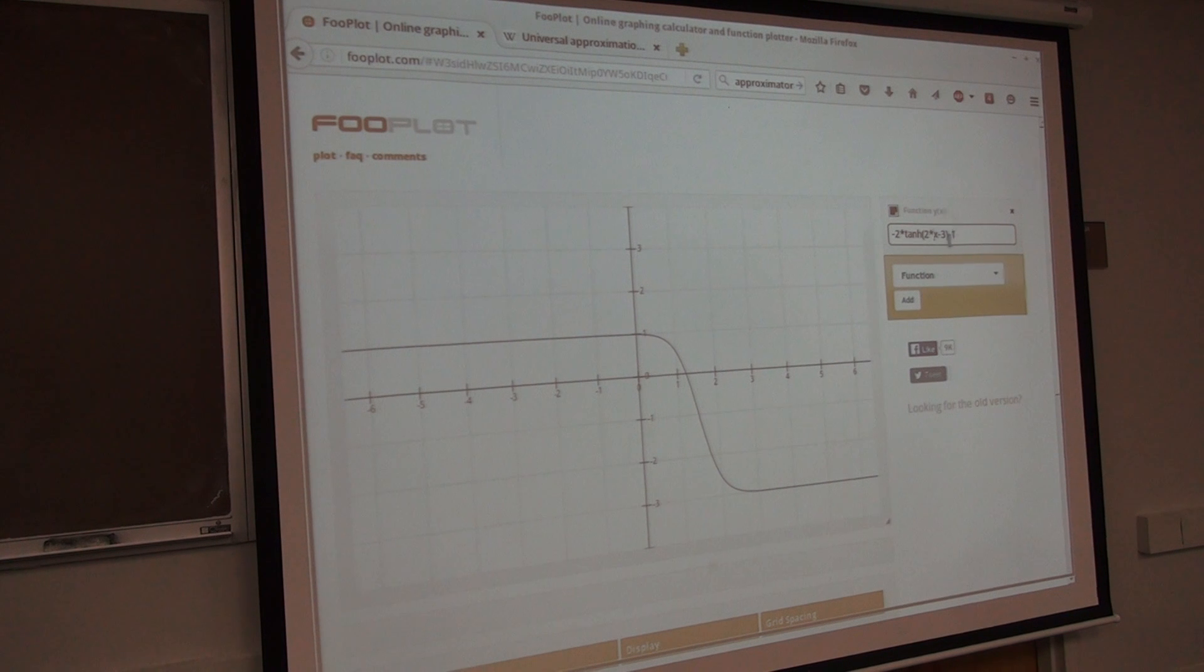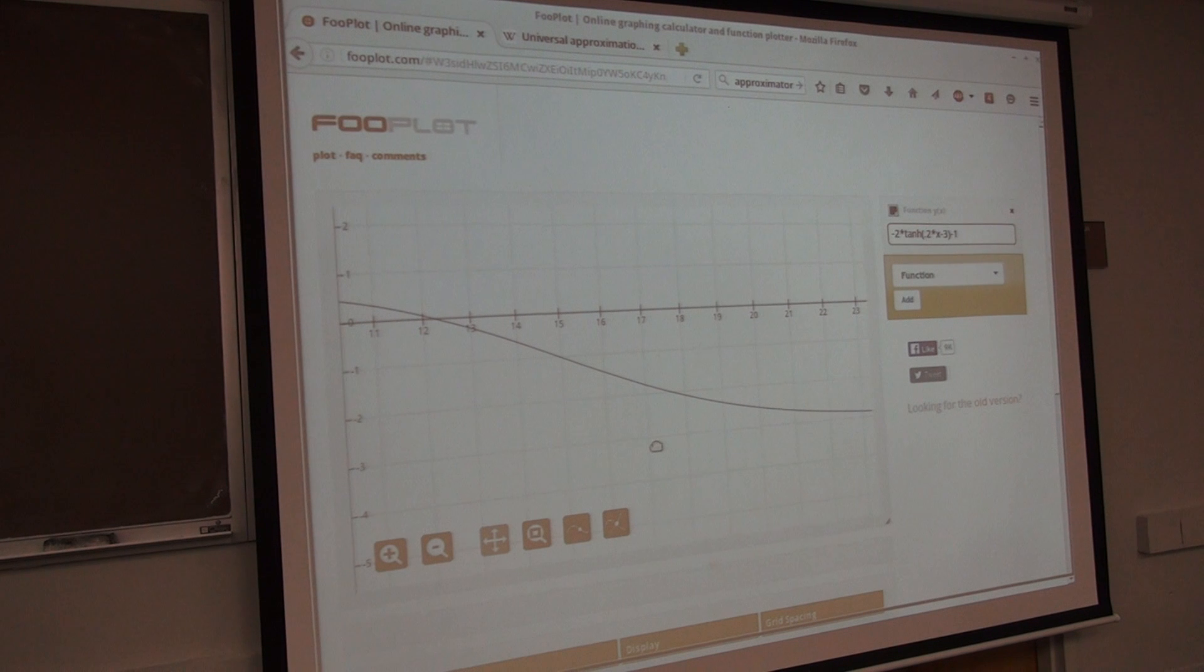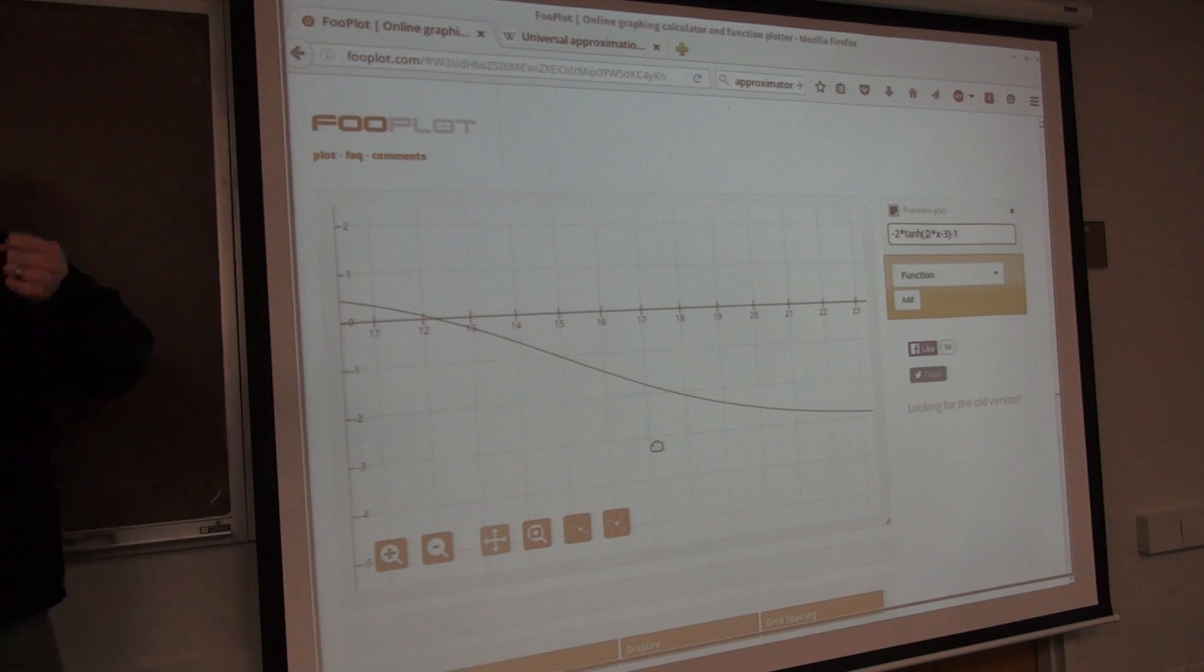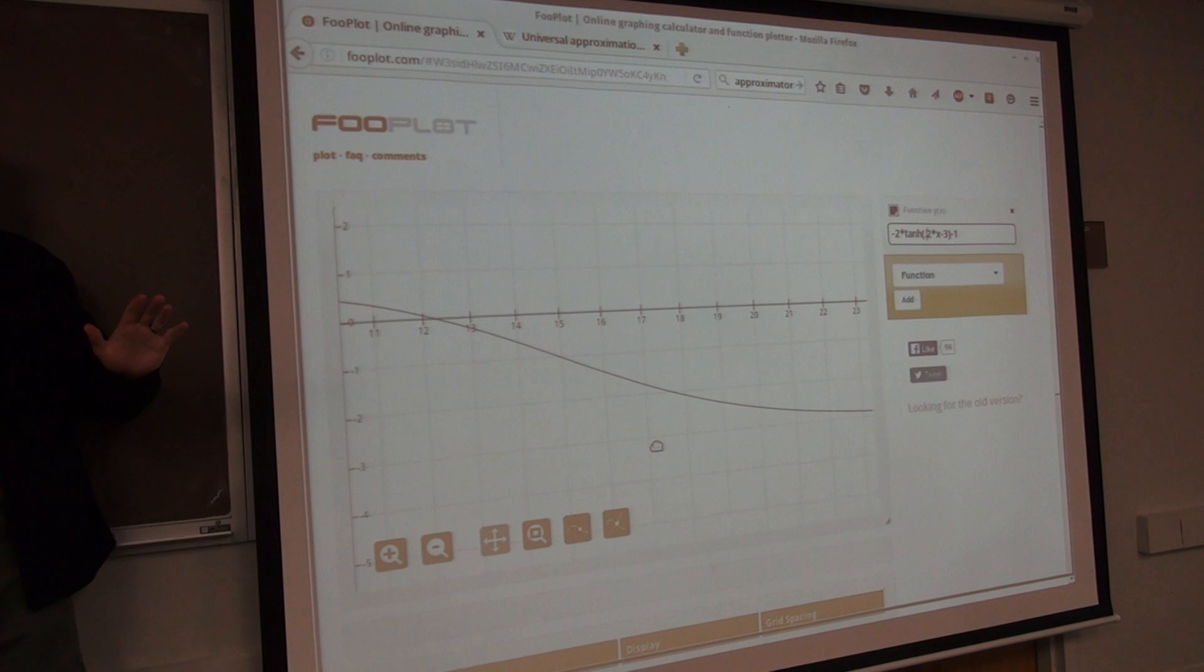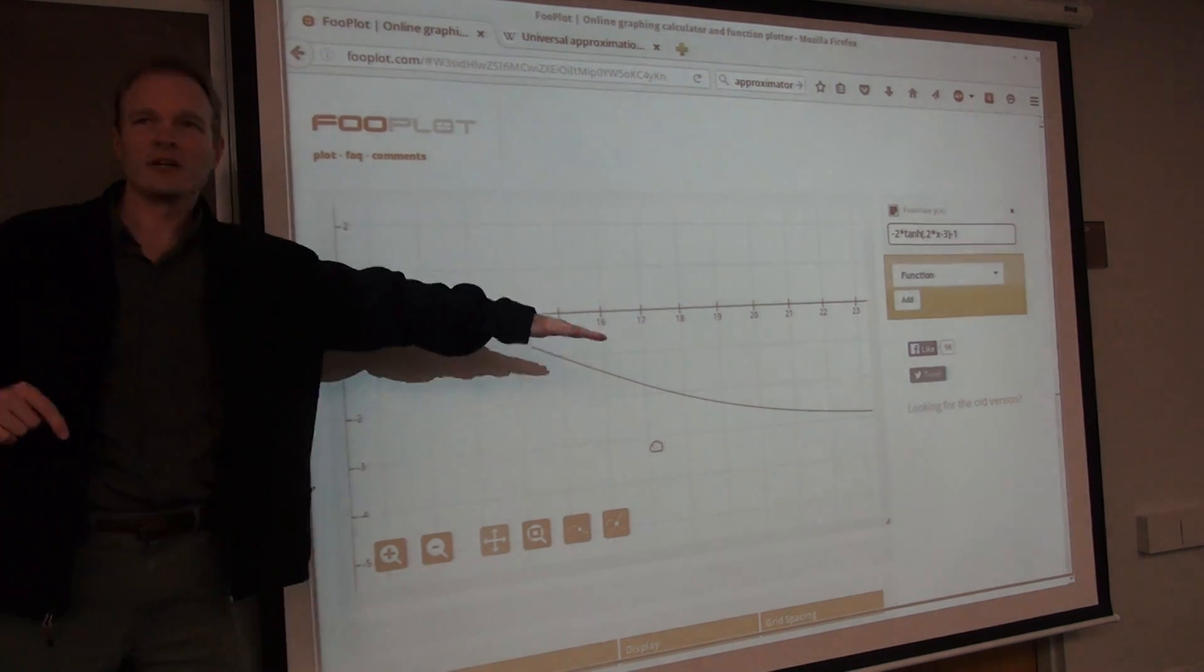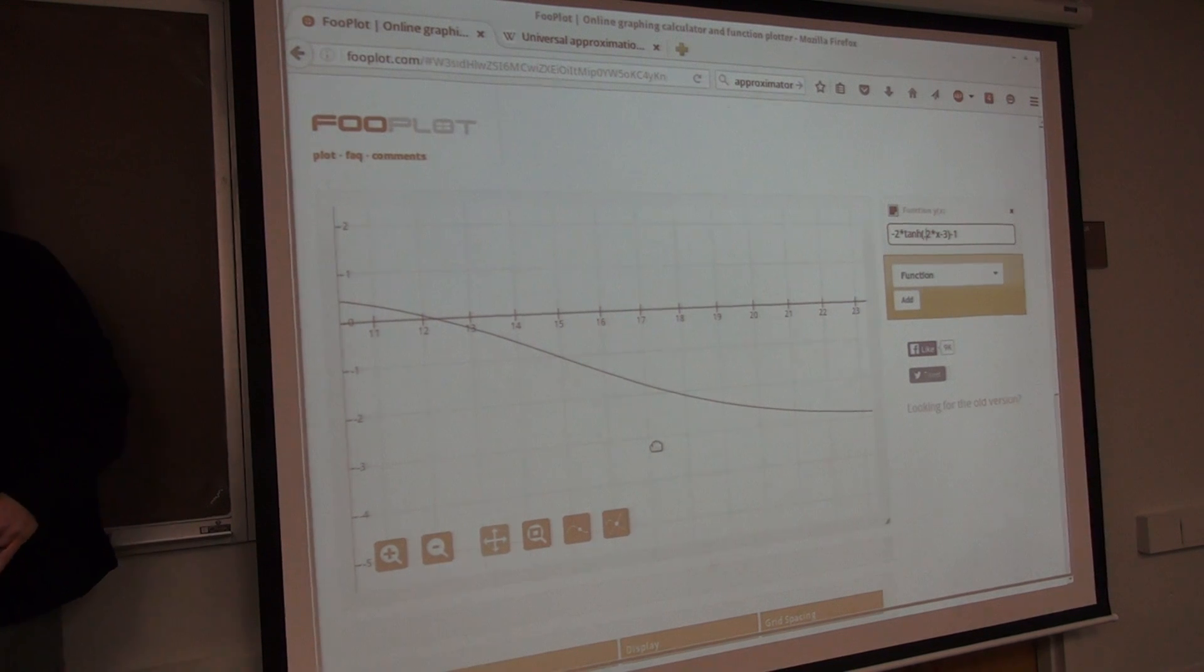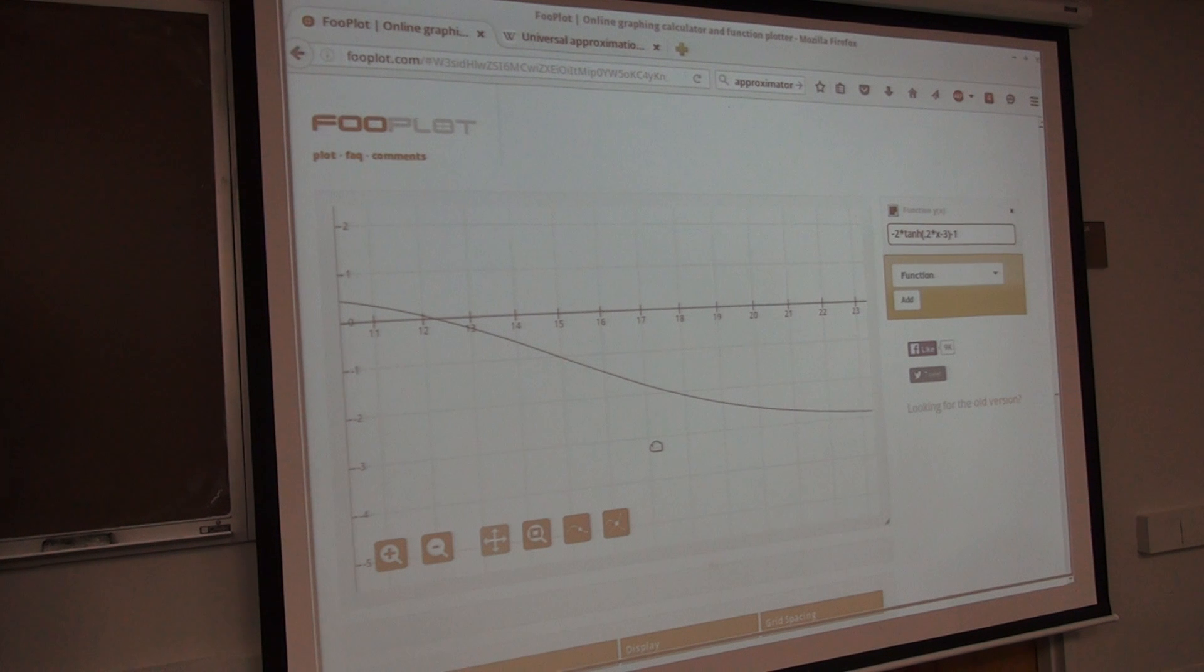There. Now I made it more vertical. And if I do point two, now it's going to be more smooth. So you are convinced that with some pretty simple math, I can stretch it this way and I can stretch it this way and I can move it this way and I can move it that way. And I can basically make this tanh reach from whatever point I want to whatever point I want. Are you convinced? Is it proven at least at an intuitive level?